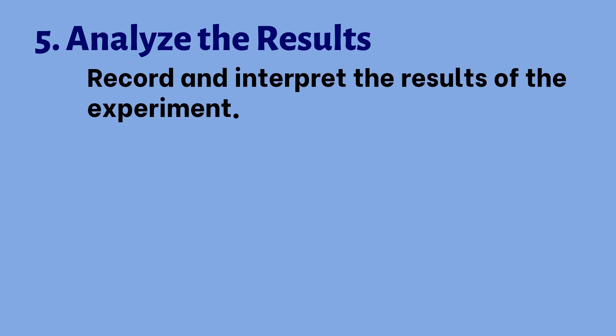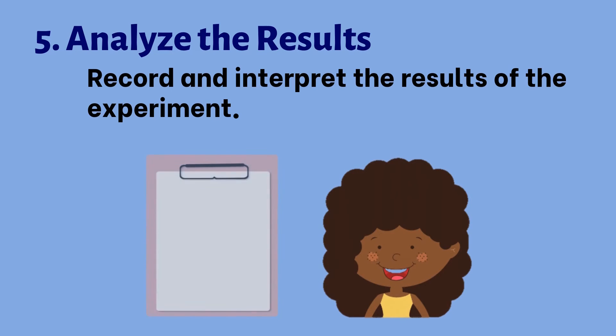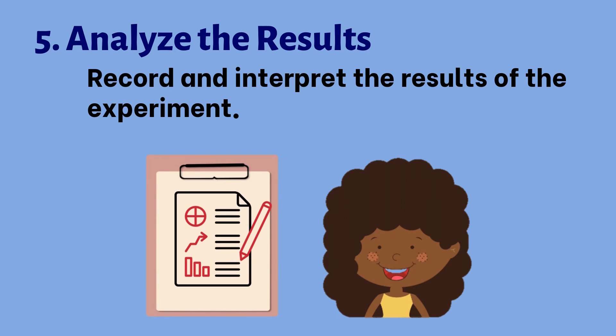The fifth step is analyzing the results. This is when the scientists record and interpret the results of the experiment. Betty will then record the results and analyze the changes that happened on the tomato plants.